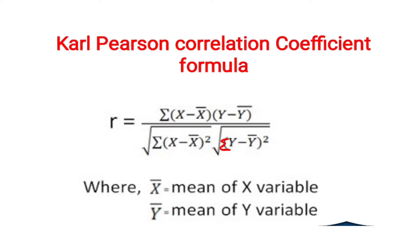The Pearson correlation coefficient formula is: R = Σ(x − x̄)(y − ȳ) divided by the square root of Σ(x − x̄)² multiplied by the square root of Σ(y − ȳ)², where x̄ is the mean of the x variable and ȳ is the mean of the y variable.